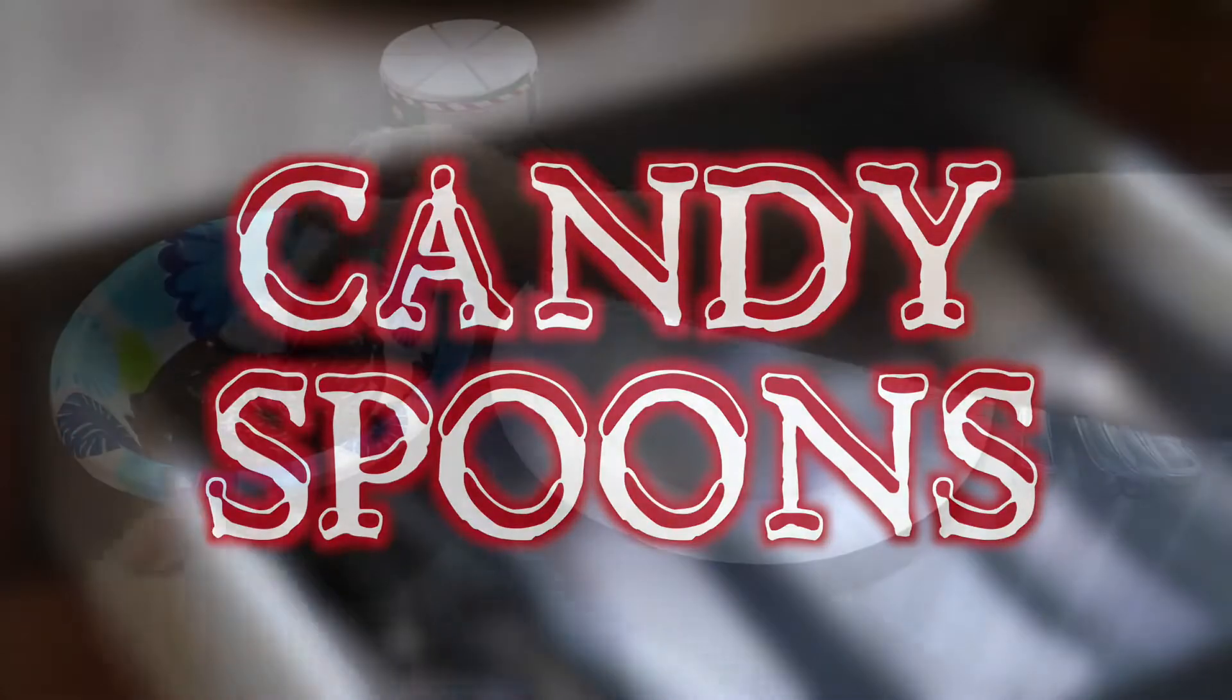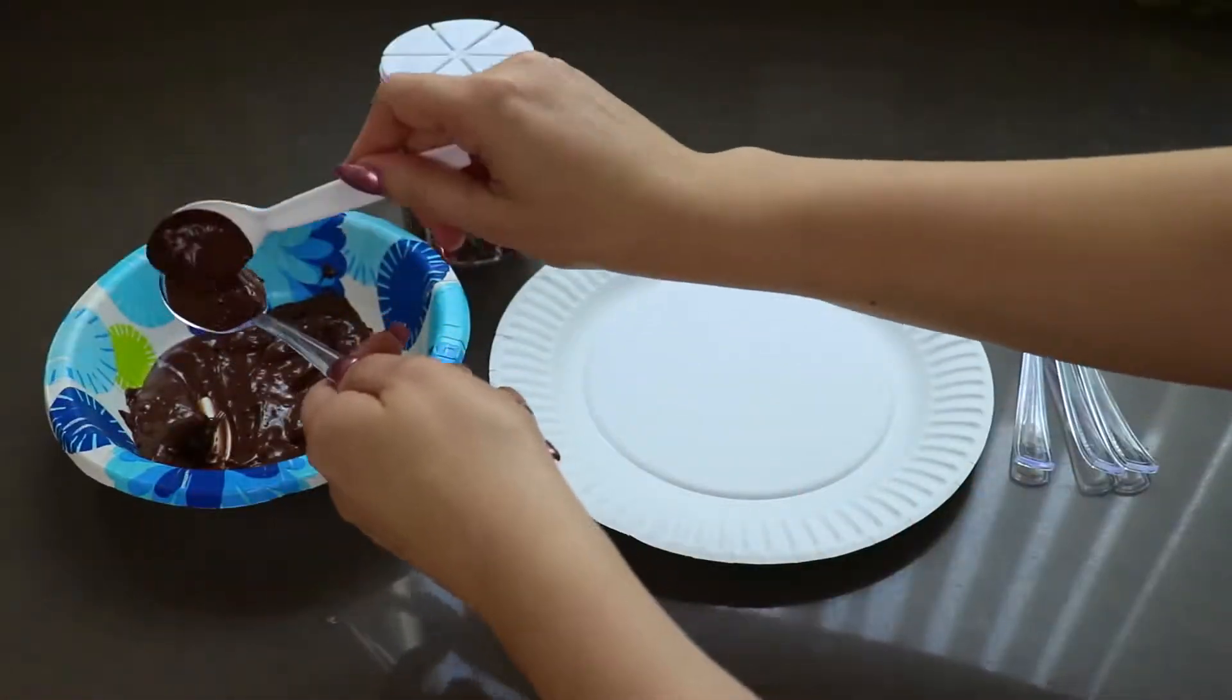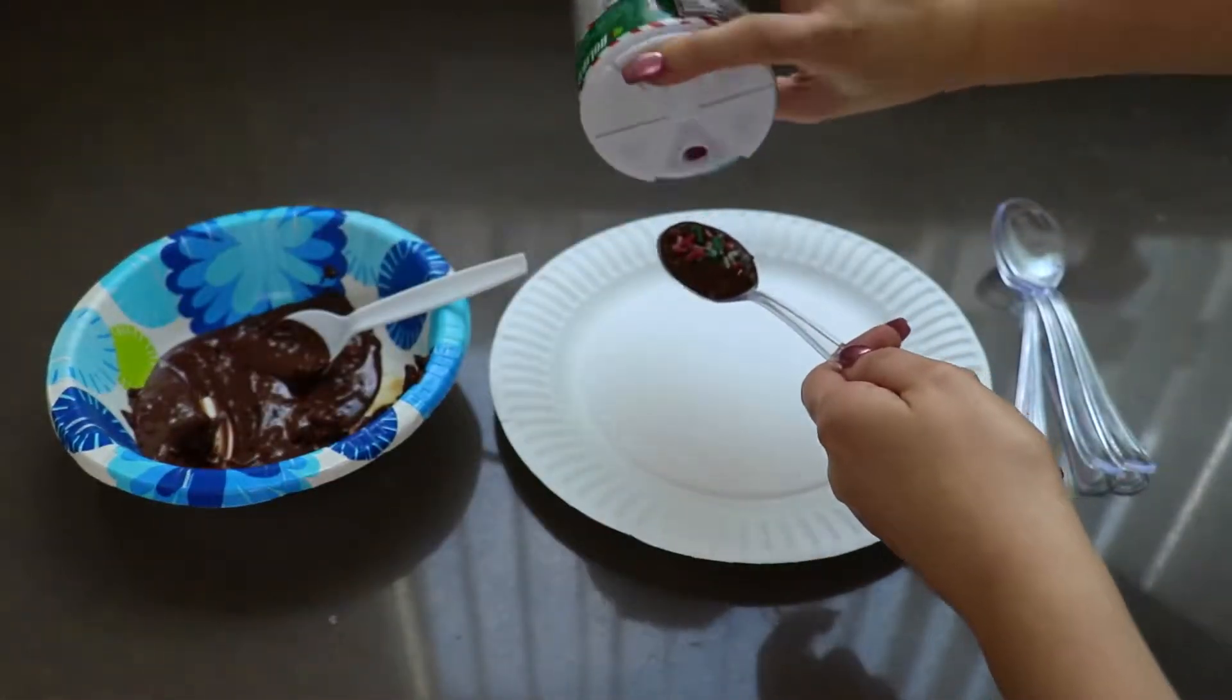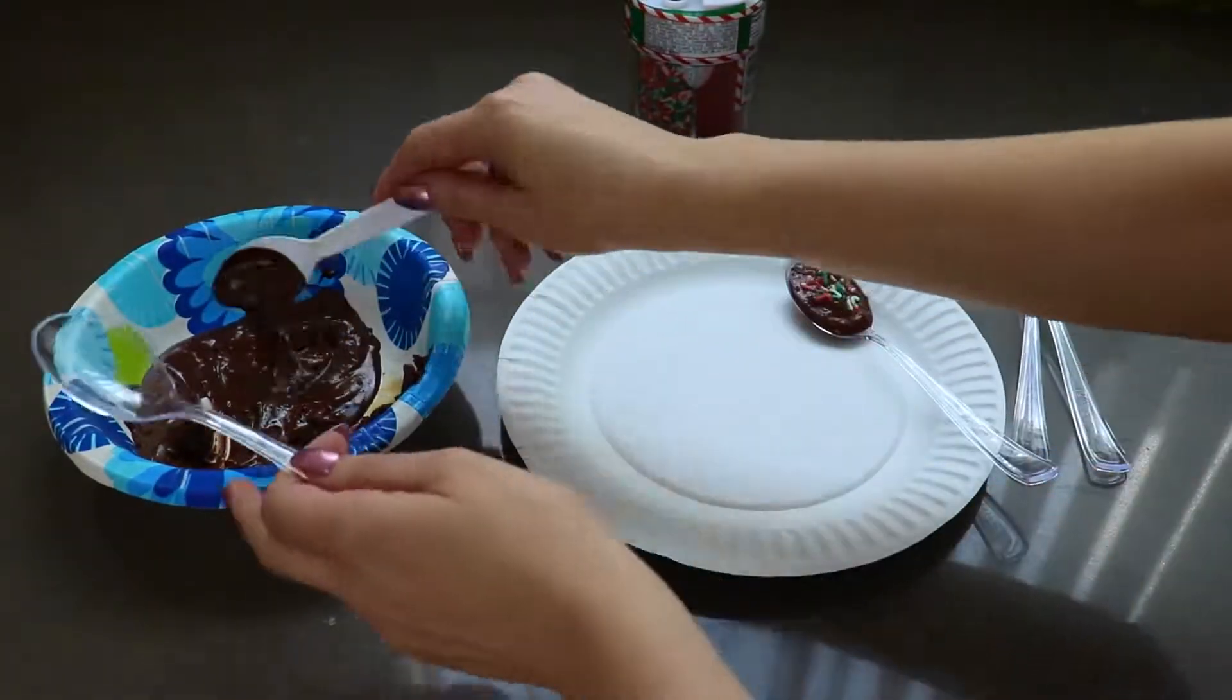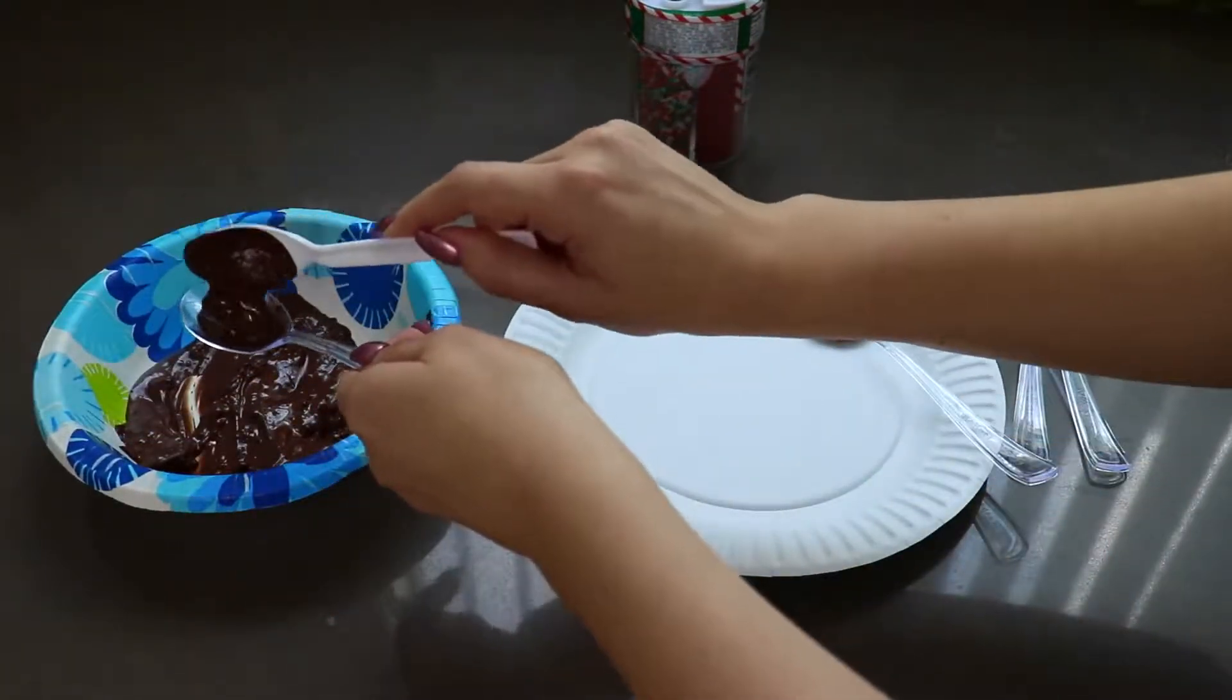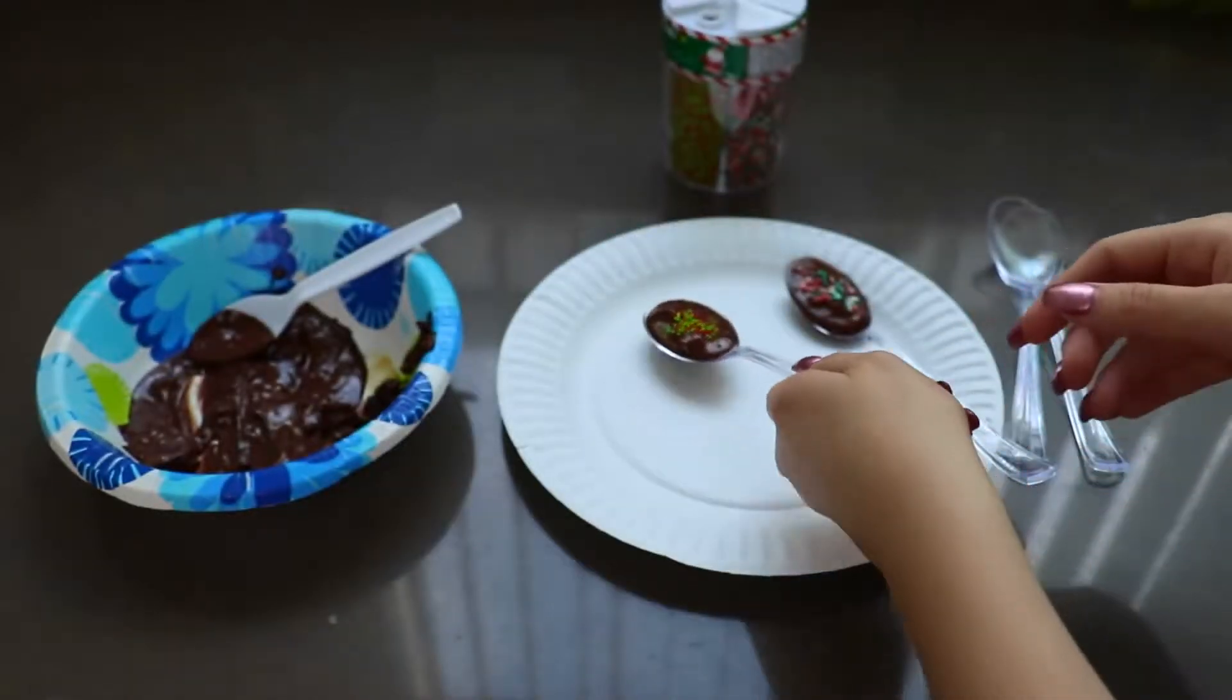Now onto candy spoons, perfect for dipping in hot chocolate. So you're just going to put some melted chocolate on a spoon and then put some sprinkles on there, and there you go. And I just put on different colored sprinkles to each spoon just to give it more pizzazz. And that's it.